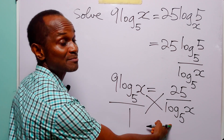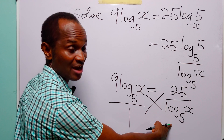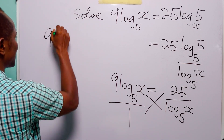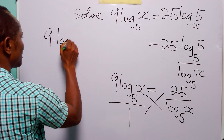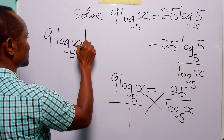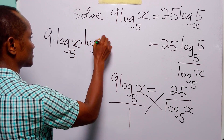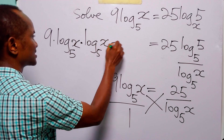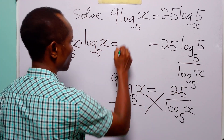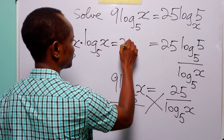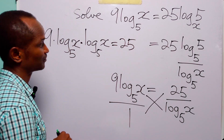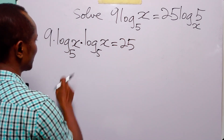...of x times log to base 5 of x is equal to 25 times 1, which is 25.